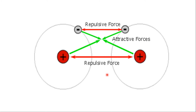The aim is to form a stable bond. The criteria for a stable bond is very simple: the force of attraction (FA) should be equal to the force of repulsion (FR). FA should equal FR.